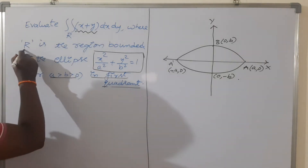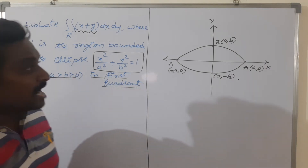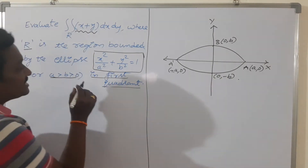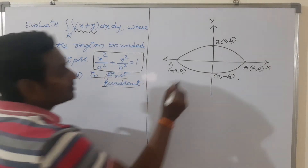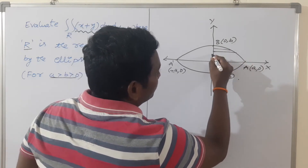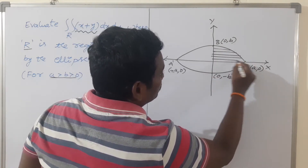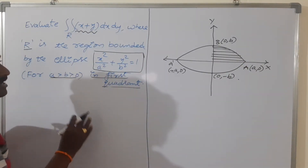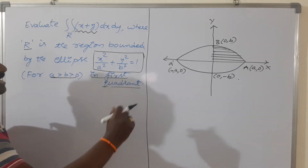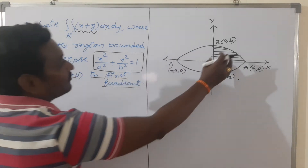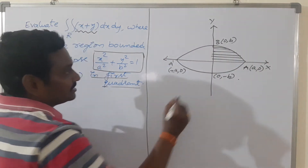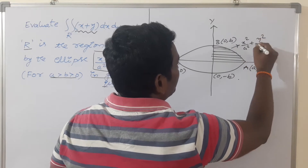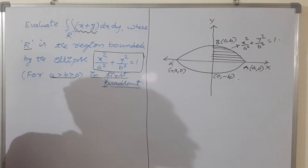We are observing that our region r does not lie in the entire ellipse. Our region is just bounded by the first quadrant by this ellipse. This is the arc of the ellipse x squared by a squared plus y squared by b squared is equal to 1.